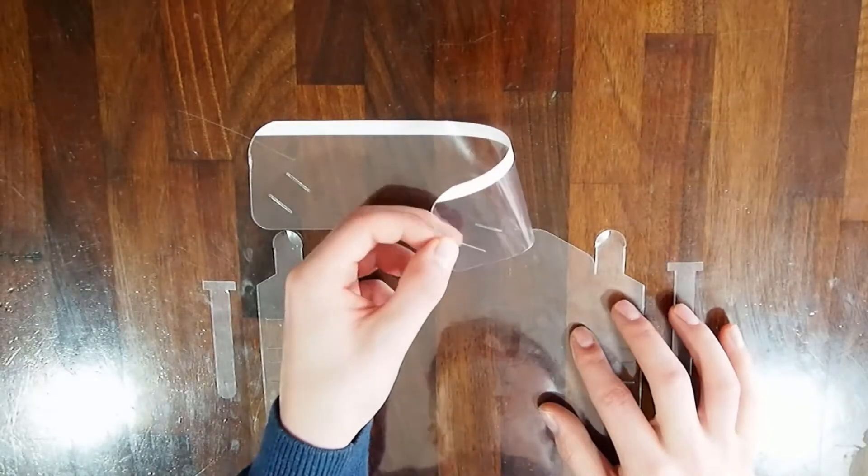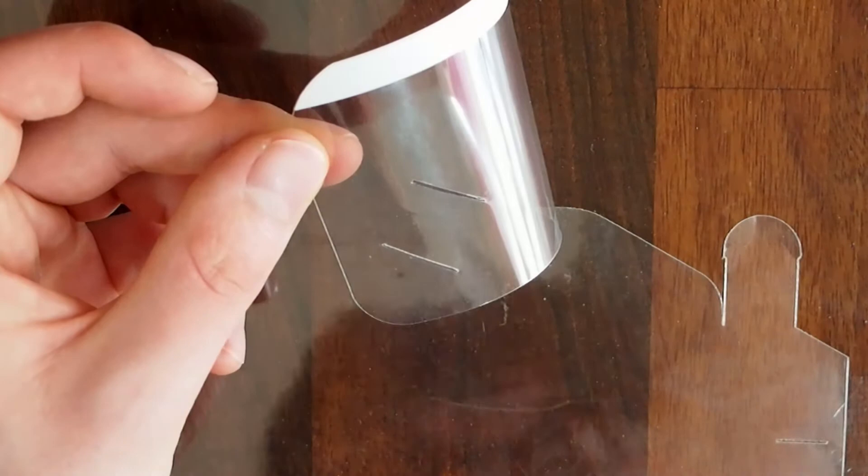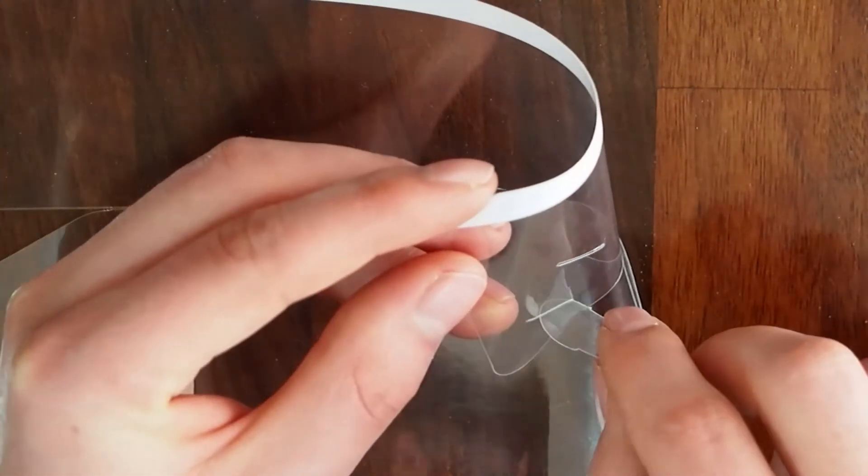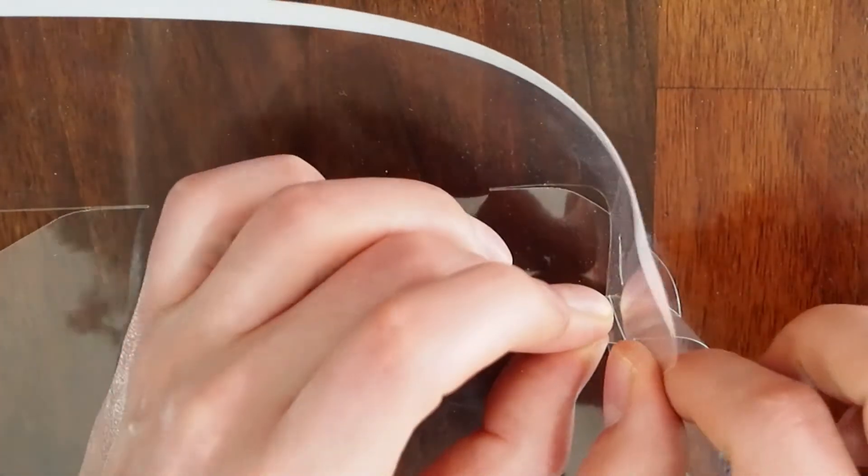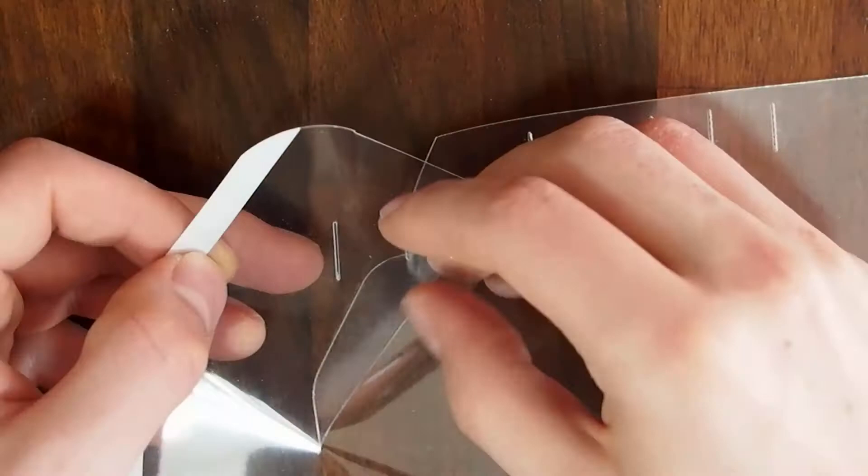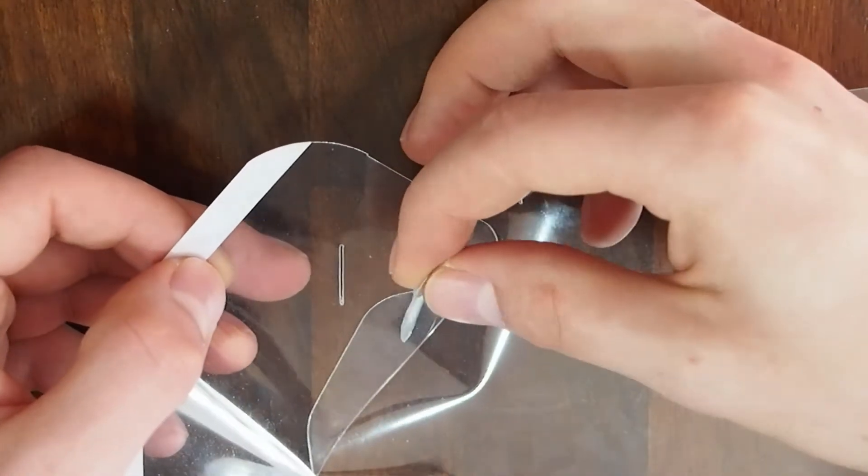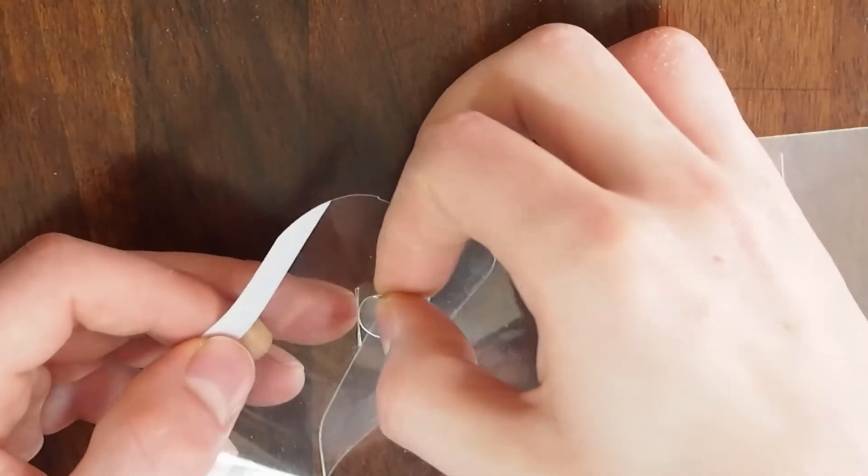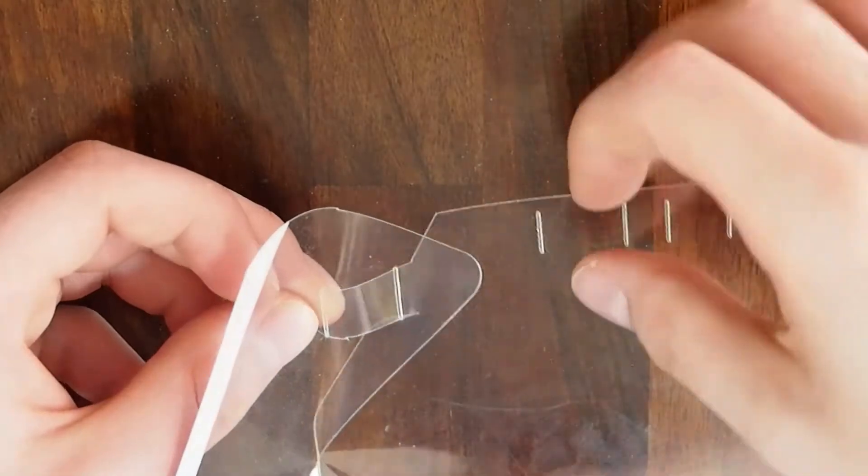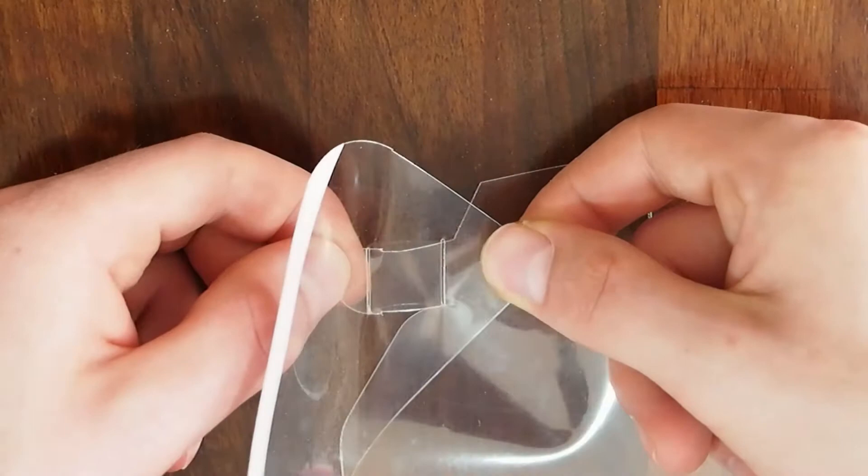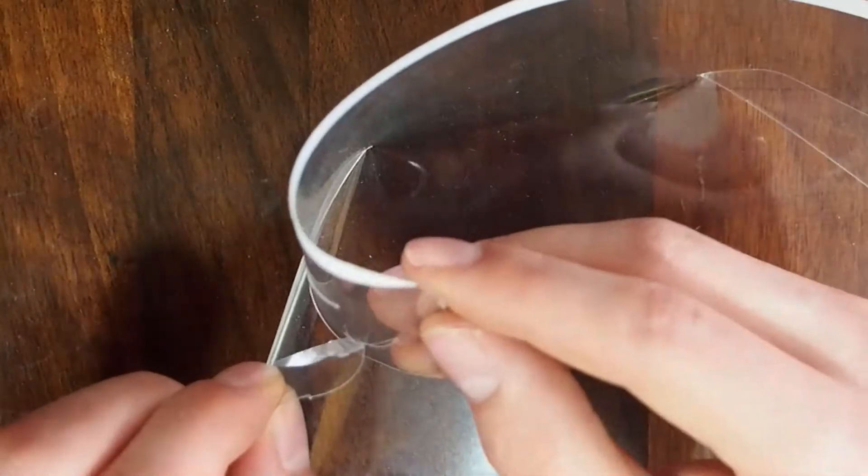Then, fold over the upper flap and feed the tongue through the lower slot from the outside in. Pull that through and feed it back through the top slot to the outside, making sure to pull it tight so it locks into place. Then repeat for the other side.